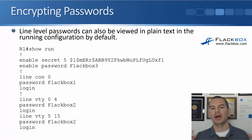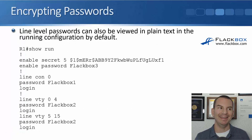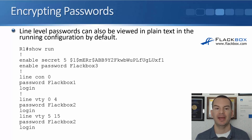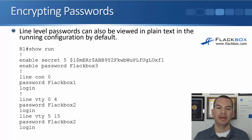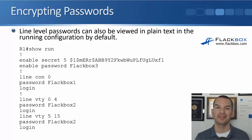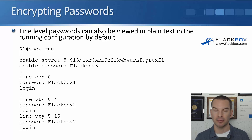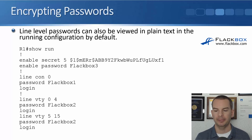As well as the enable password being shown in plain text, any line level passwords that you've entered are shown in plain text by default as well. So if I did a show run now, I can see that my enable secret is encrypted, my enable password is in plain text, and also those passwords I configured under the console and the virtual terminal lines are in plain text as well. Again, that is bad — I don't want those showing up in plain text.